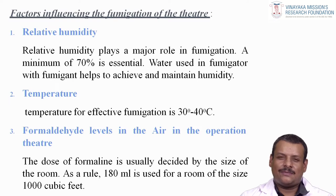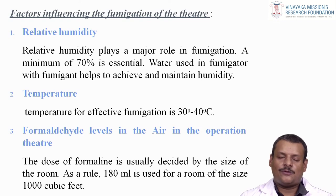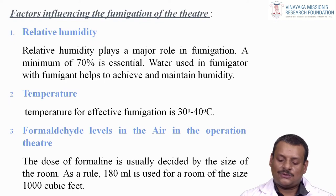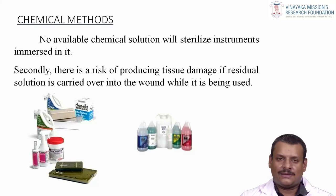The factors influencing fumigation of the theatre are relative humidity, temperature, and formalin levels in the air. Relative humidity plays a major role; a minimum of 70% is essential, and water used in the fumigator helps achieve and maintain temperature and humidity. The temperature for effective fumigation is 30°C to 40°C. The dose of formalin is decided by the size of the room; as a rule, 180 ml is used for a room of approximately 1000 cubic feet.